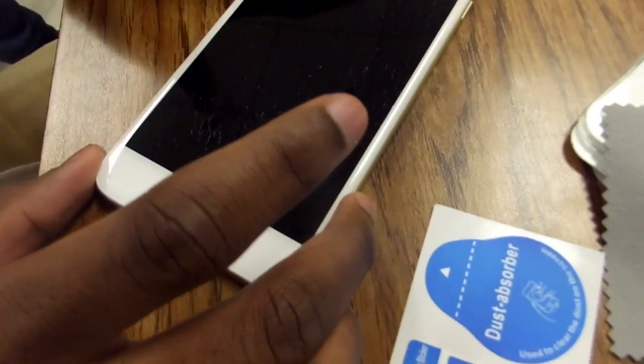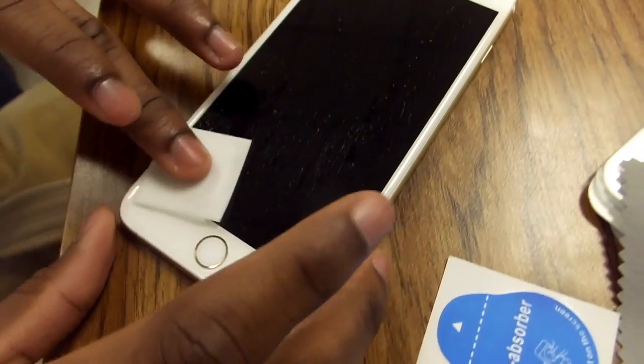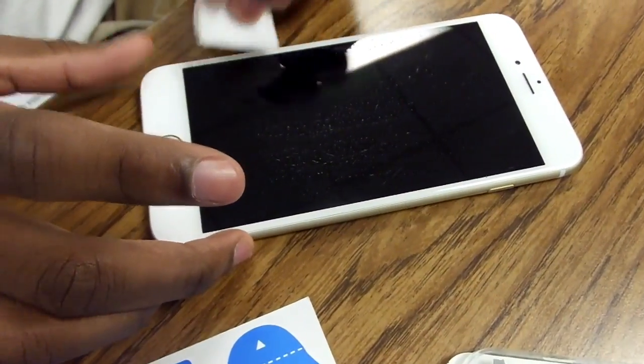Once you're done cleaning it off, you want to make sure it's dry and you want to check for anything that's stuck, any residue that wasn't able to get up. So I'm using the microfiber wipe to actually dry it off and make sure nothing is sticking on it.